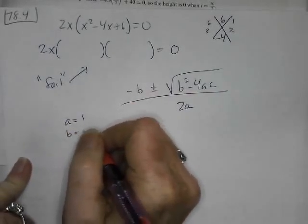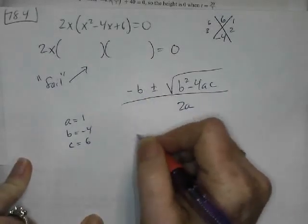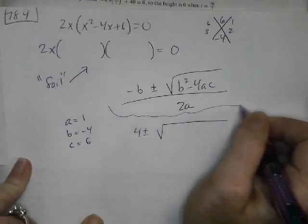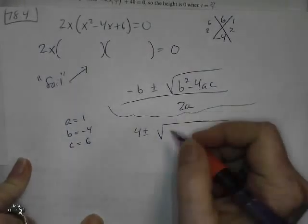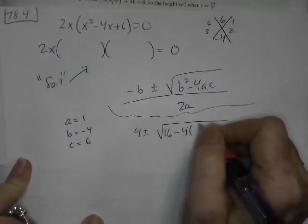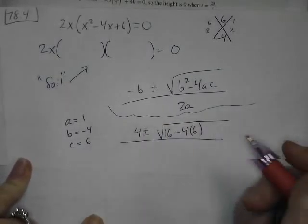So a is going to be 1, and b is going to be negative 4, and c is going to be 6, and negative b plus or minus. You guys won't let me mess it up, will you? b squared. I didn't write the 1 because it wouldn't do anything.